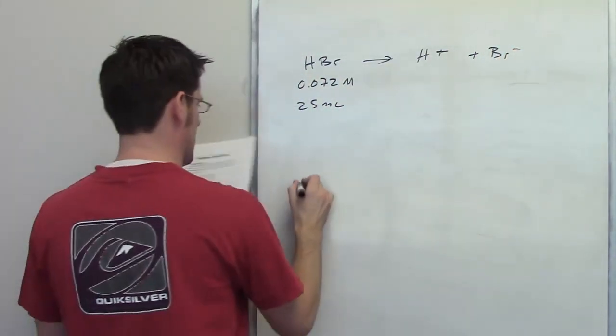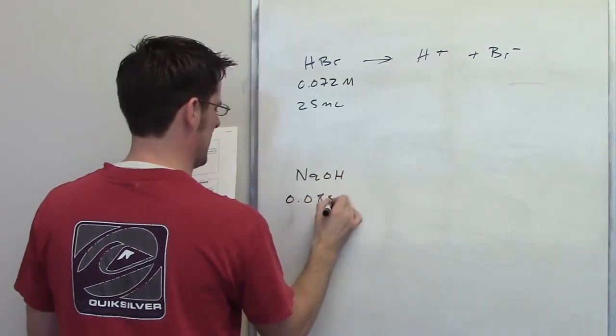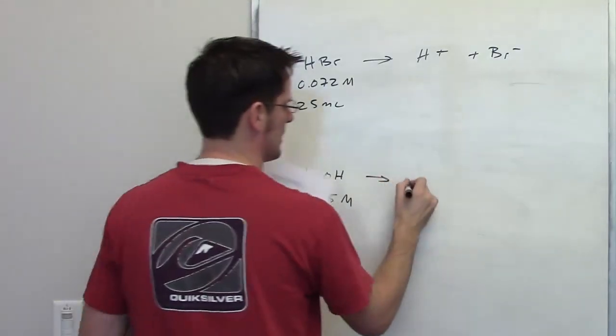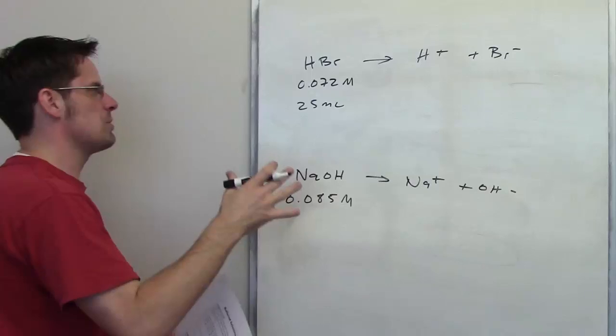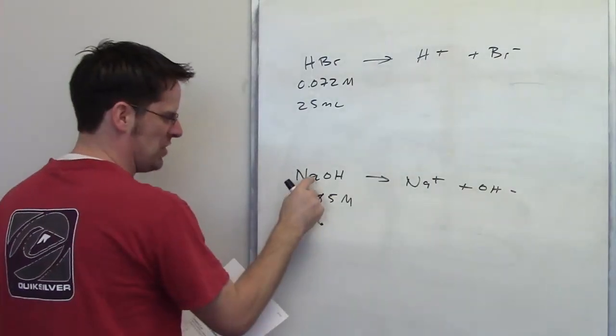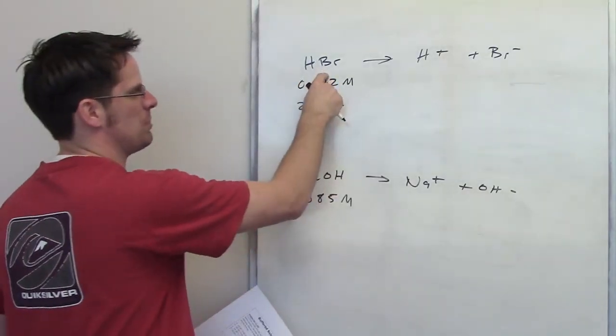It then says separately that I've got sodium hydroxide, and I've got a solution that has a concentration of 0.085 molar. It's of course going to dissociate completely to form Na+ and OH-. It asks me, how much of this sodium hydroxide do I have to add to completely neutralize this HBr?